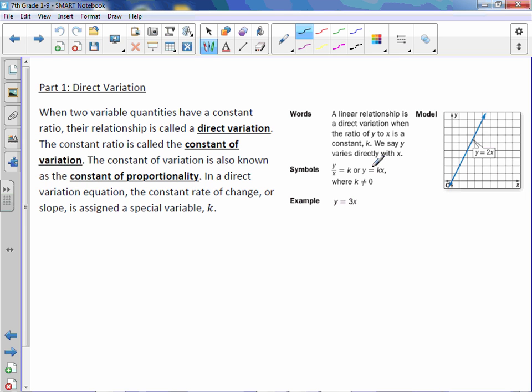So we could say that y equals kx is a direct variation equation where k represents a constant. So for example, y equals 3x, three would be the constant or k value, which means the constant of proportionality is three. Similarly, in this example, the constant of proportionality would be two.